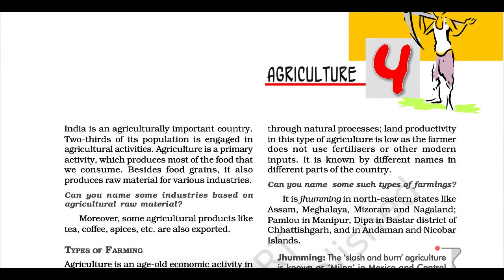Horticulture crops. In 2018, India was the second largest producer of fruits and vegetables in the world after China. India is the producer of tropical as well as temperate fruits: mangoes of Maharashtra, Andhra Pradesh, Telangana, Uttar Pradesh, and West Bengal; oranges of Nagpur and Cherrapunji, Meghalaya; bananas of Kerala, Mizoram, Maharashtra, and Tamil Nadu; lychee and guava of Uttar Pradesh and Bihar; pineapples of Meghalaya; grapes of Andhra Pradesh, Telangana, and Maharashtra; and apples, pears, apricots, and walnuts of Jammu and Kashmir and Himachal Pradesh are in great demand the world over. India produces about 13% of the world's vegetables. It is an important producer of pea, cauliflower, onion, cabbage, tomato, brinjal, and potato.